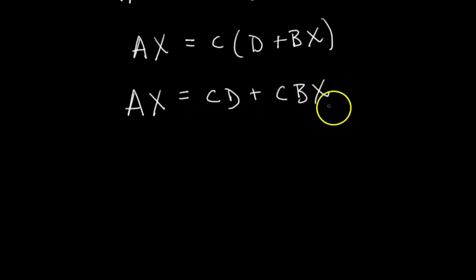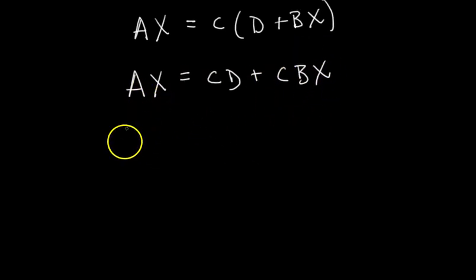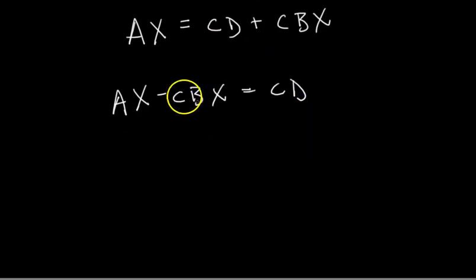Okay, we're getting closer. Now I want to get all my terms that have the X matrix on the same side. So I'm just going to subtract CBX, the matrix CBX from both sides. So then I would get AX minus CBX equals CD. And I'm really close.